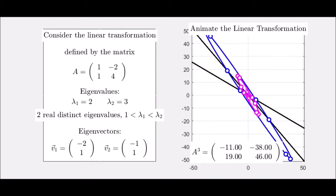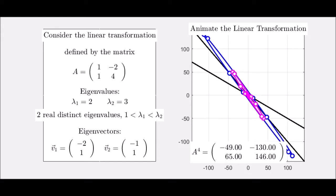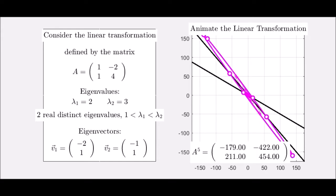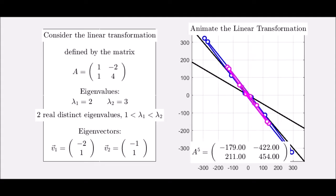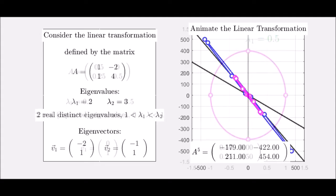The points are being tracked by the circles you see in this illustration, and as you continue to repeat, we see the matrix A to the fifth now is enormous. This is not a convergent matrix, primarily because the eigenvalues two and three are larger than one.